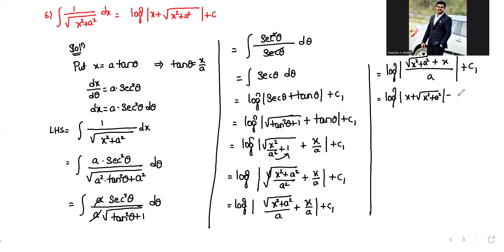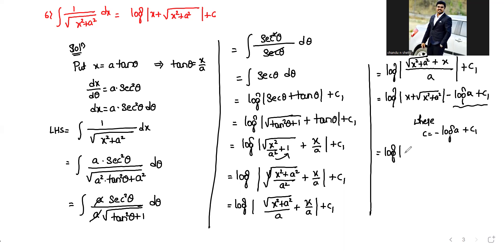Using log x minus log y formula, with y equal to a plus c1, where c equals minus log a plus c1, we get log mod x plus square root of x square plus a square plus c, which equals RHS.